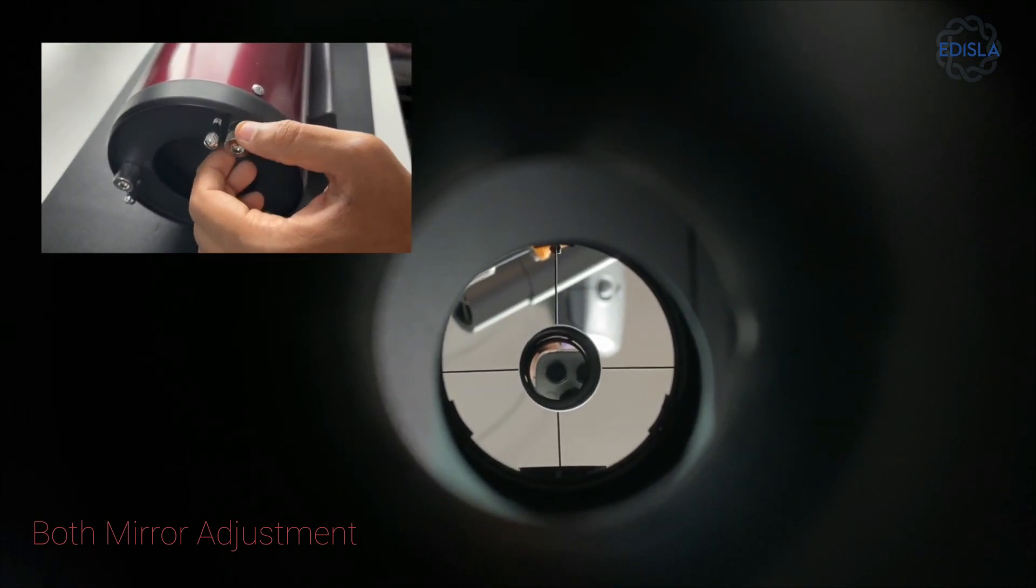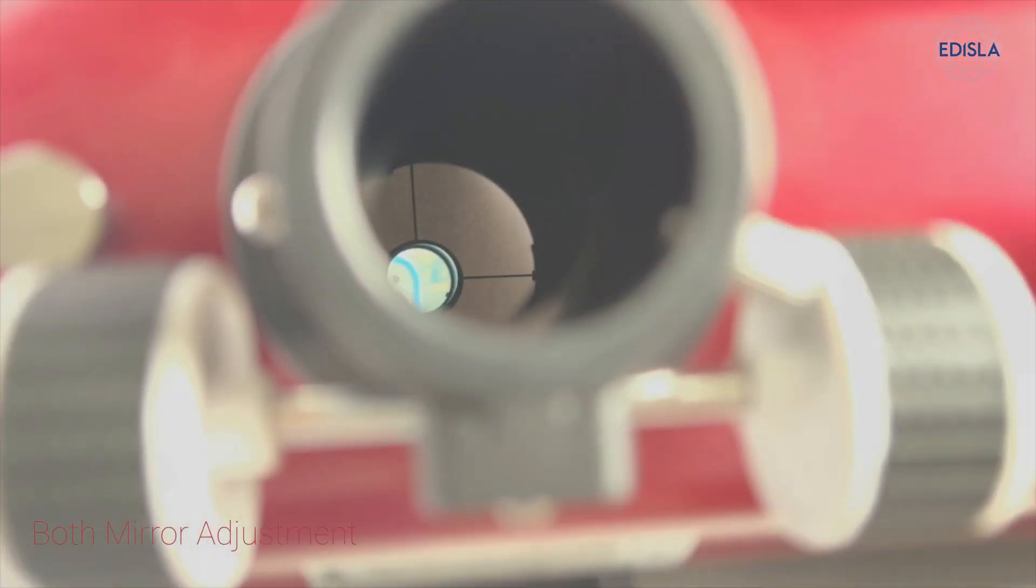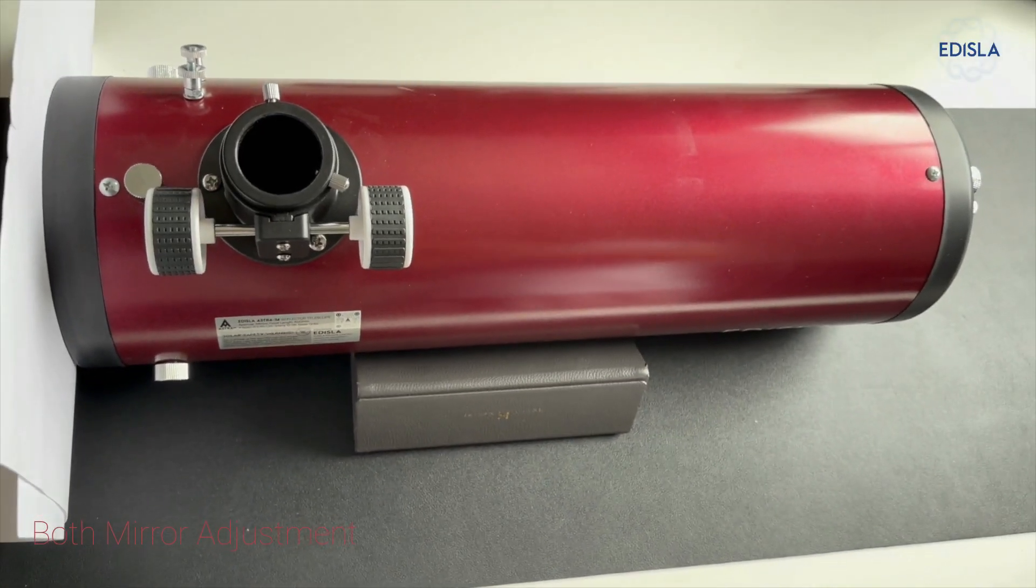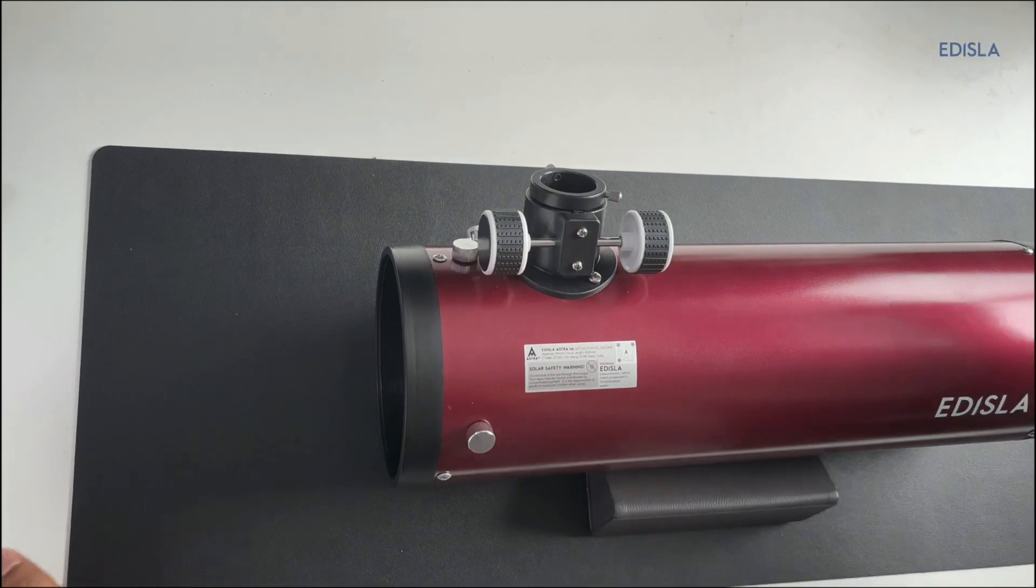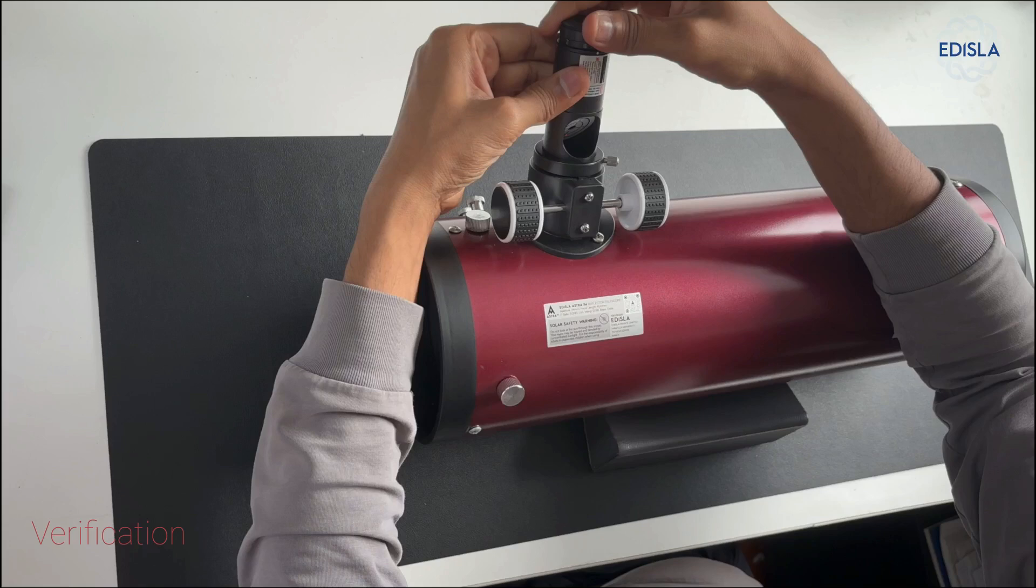Now that we've successfully completed the collimation of your Astra telescope, keep in mind that this process doesn't require any special tools. It's simple to fix and works with precision. We'll now verify the accuracy with a laser collimator, though you don't need to do this.